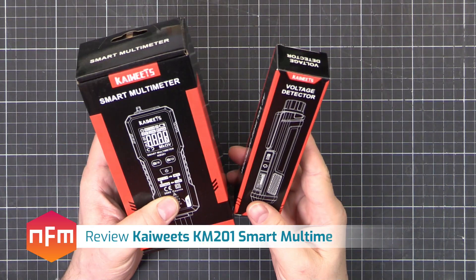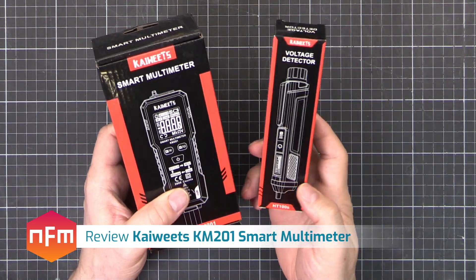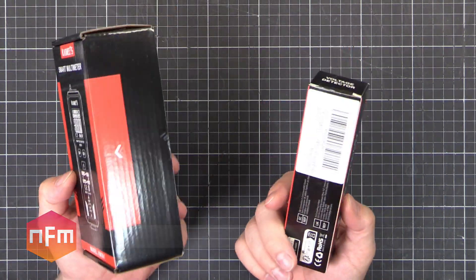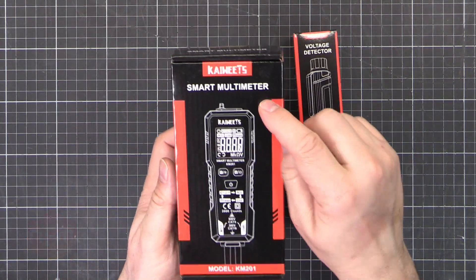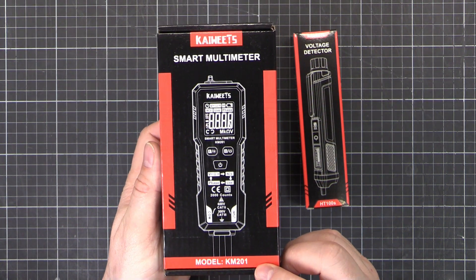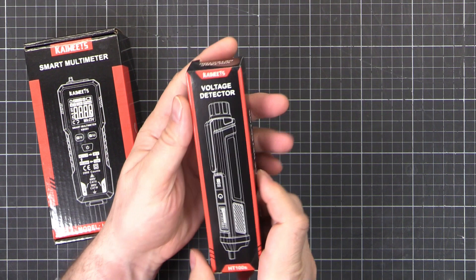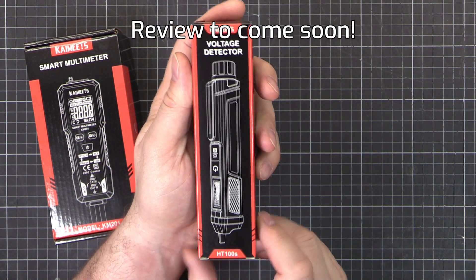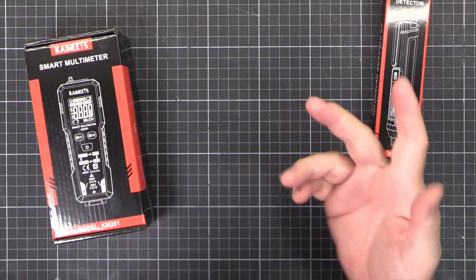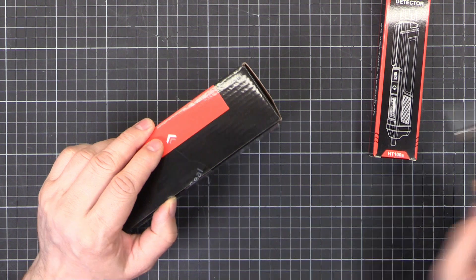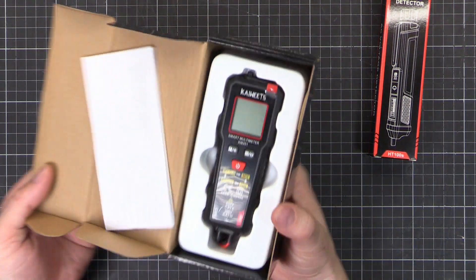Hey, product review time. I was contacted by Kaywheats the other day and they said we've got some things we want to send you to have a look at. So I said sure, send them over and here they are. So we've got a smart multimeter model number KM201 and we've got a voltage detector model HT100S. I've got AC and DC calibrators and precision resistors, so we can give these things a good run and see how they go.